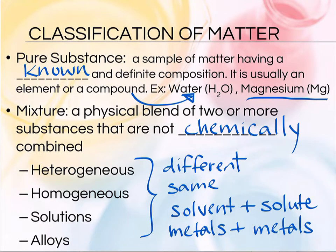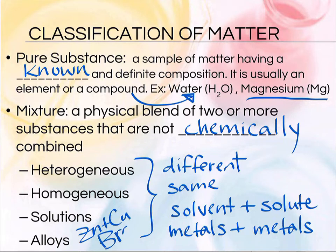Like a brass trumpet — a trumpet made from brass has zinc and copper mixed together, and they make a substance called brass where you can't really tell where the copper stops and the zinc starts. You just see that it all looks the same. So that's an example of a homogeneous mixture known as an alloy.